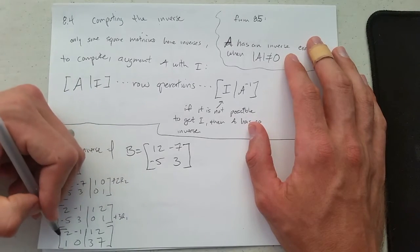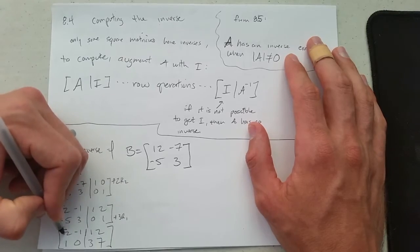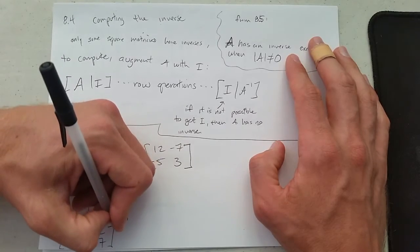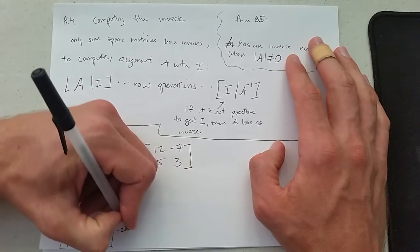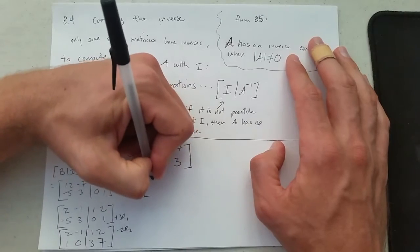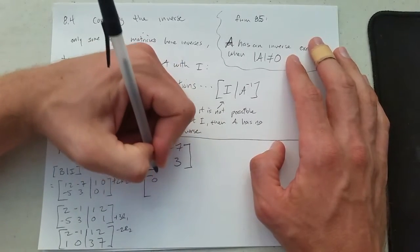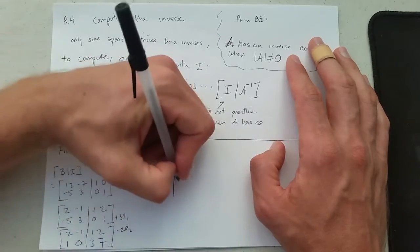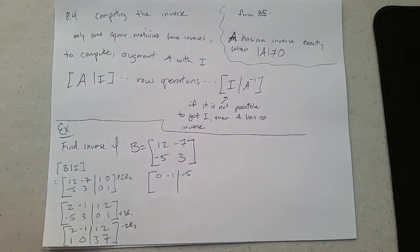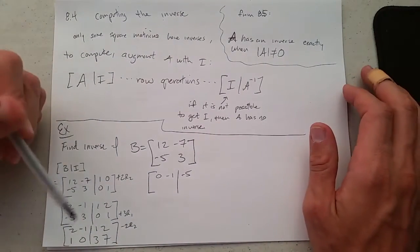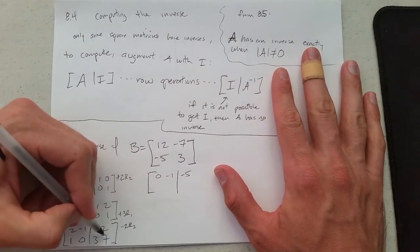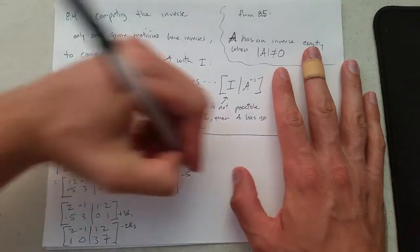All right, so we're doing pretty good. We're going to use that 1 to knock out the 2. So we're going to go minus 2 row 2. So we have 0, negative 1, negative 6 plus 1 is negative 5, and negative 14 plus 2 is negative 12.